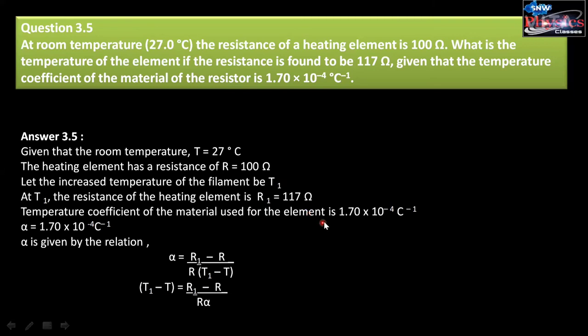We know that temperature coefficient is represented by alpha, α is equal to 1.70 into 10 to the power minus 4 per degree Celsius. Now using the formula of temperature coefficient, our relation is α is equal to R1 minus R divided by R into T1 minus T. We will use this relation to find out the increased temperature.